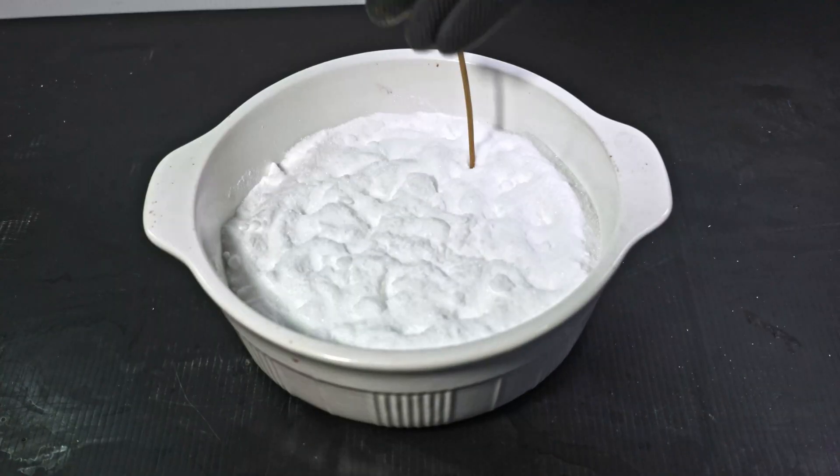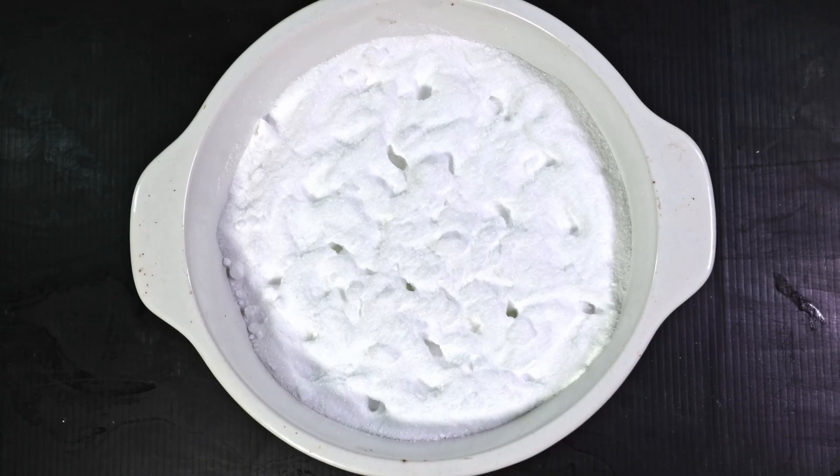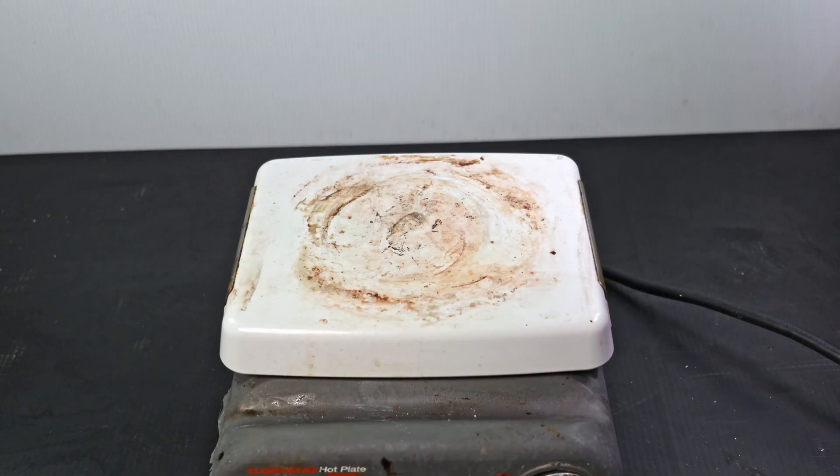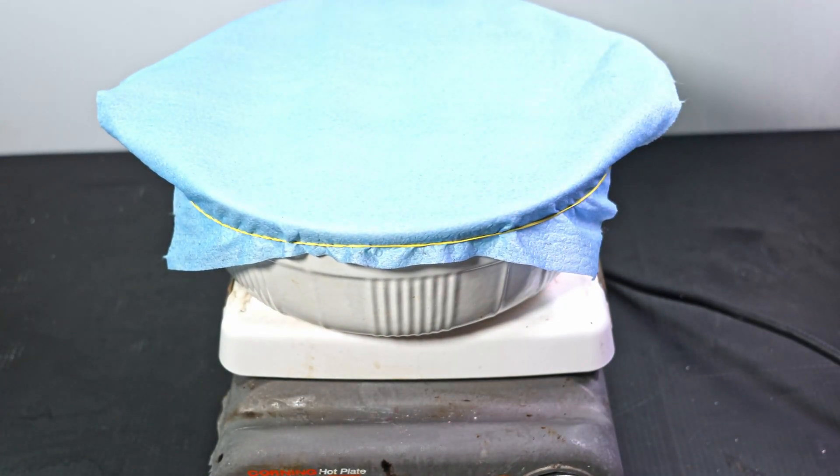I stirred it around some and poked holes to allow water to better escape. Finally, I put it on my hot plate with a cloth over to prevent contaminants from getting in. I set my hot plate to around 130°C, accounting for the ceramic slow heating and thermal loss.